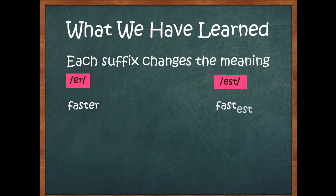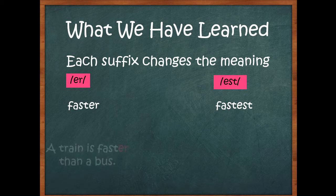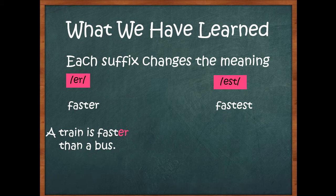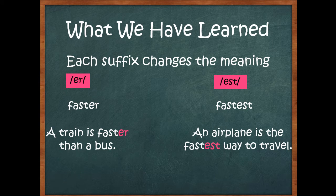Can take the same base word and talk about it being number one, fastest. Faster, fastest. A train is faster than a bus, that's a comparative. Two things are being compared. An airplane is the fastest way to travel. That means that there are many ways, but the airplane is number one. That's called a superlative.